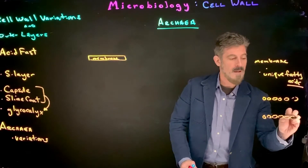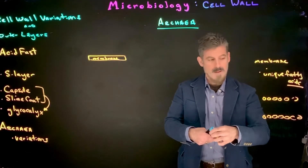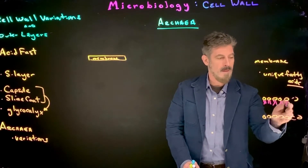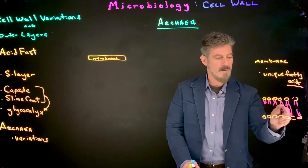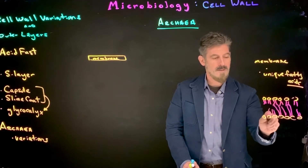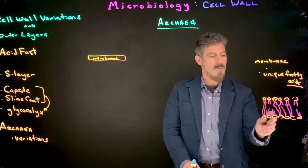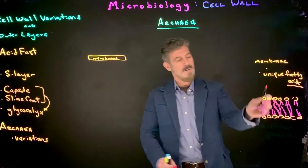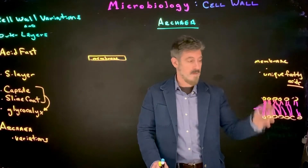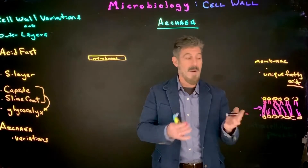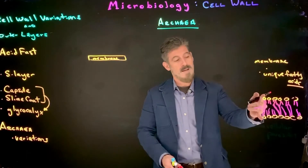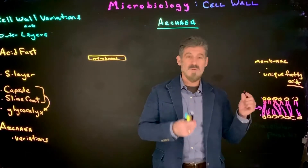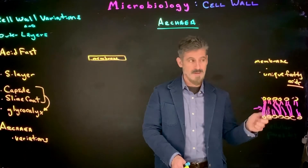These are the polar heads of the phospholipids and these are the nonpolar fatty acid tails. What we could see in archaea is actually some bonding specifically between the fatty acid tails so that they're connected from one side to the other. So it sort of makes it a monolayer, really, in this sense. But generically the same structure with specific, unique chemical variation.